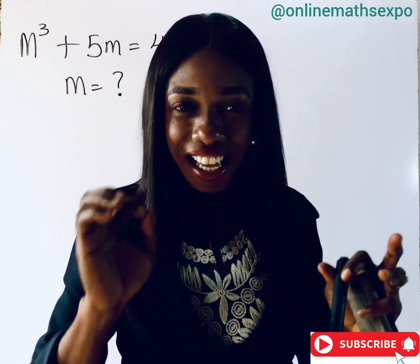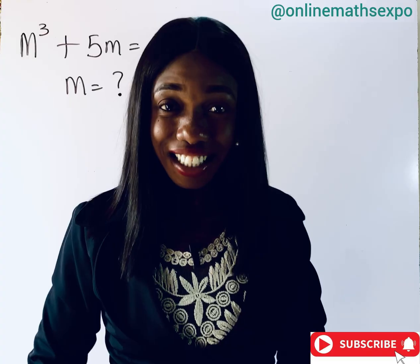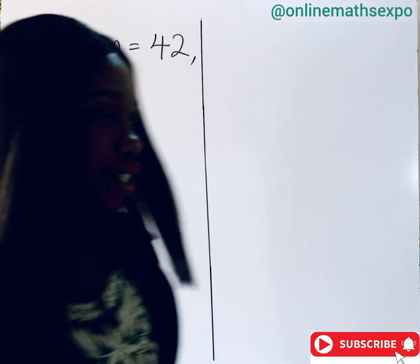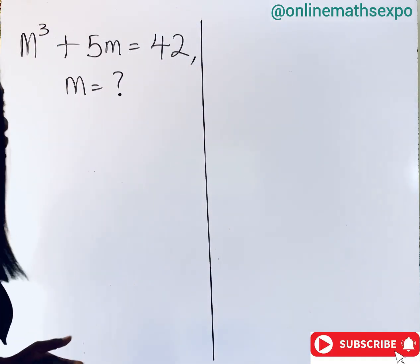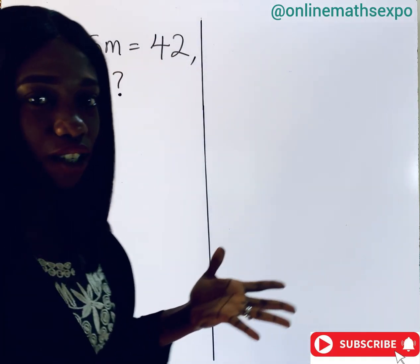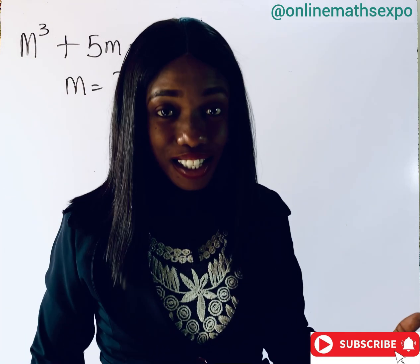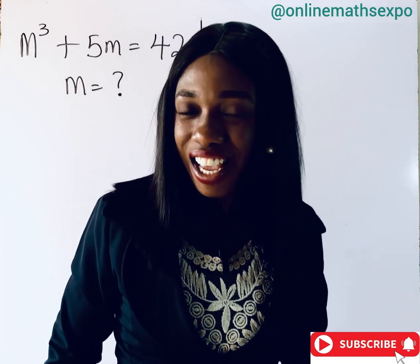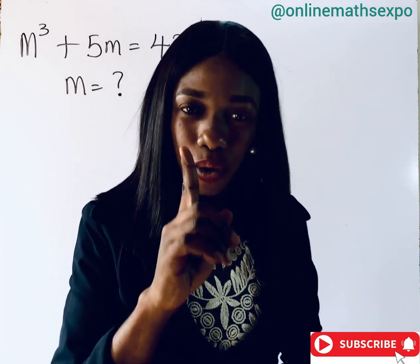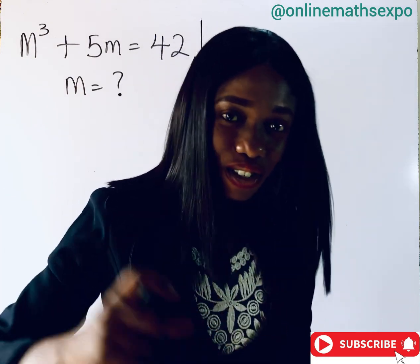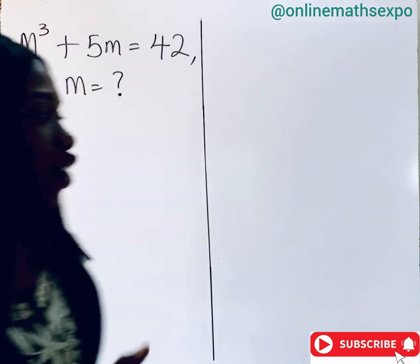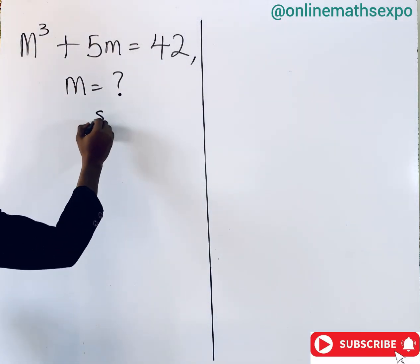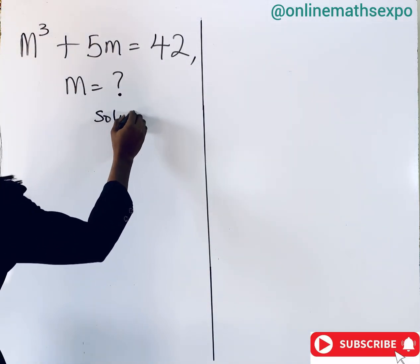We are going to use the synthetic division method. You'll notice that we don't have any value of m yet, so we're going to use trial and error to get one, and then use it to get the remaining two. Join me and see how simple it is.